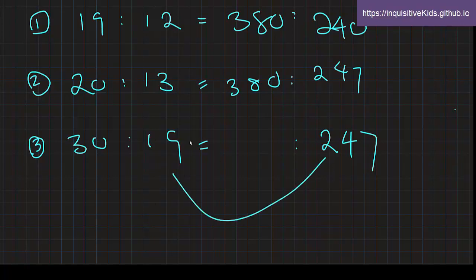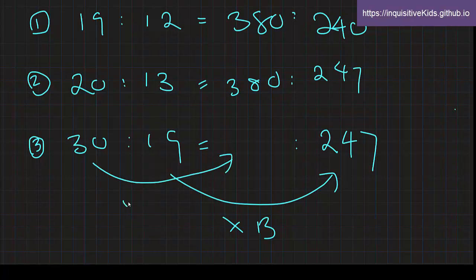So what did you have to multiply in order to get from 19 to 247? From here to here, you multiply 13. So meaning you have to do the same to 30 as well. And you get 390.